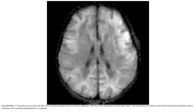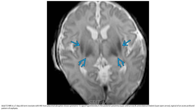The involvement of the cerebral cortex with sparing of the deep gray nucleus is consistent with partial prolonged pattern of hypoxic ischemic encephalopathy. This is T2 MRI in a seven-day-old term neonate with HIE from placental abruption, showing symmetric T2 signal hypointensity in the posterior limb of the internal capsule and anterolateral thalamus, typical of an acute profound pattern of asphyxia.